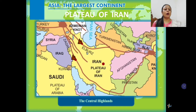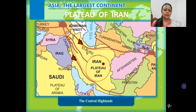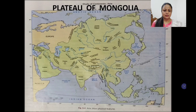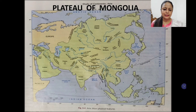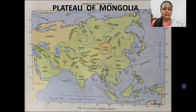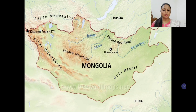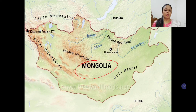The Plateau of Iran is another intermontane plateau, surrounded by ranges like Elbrus and Zagros. Then there is the Plateau of Mongolia, another important plateau in the central part of Asia. Mongolia lies within the Mongolian plateau.